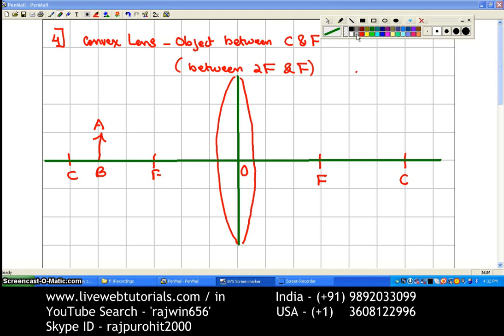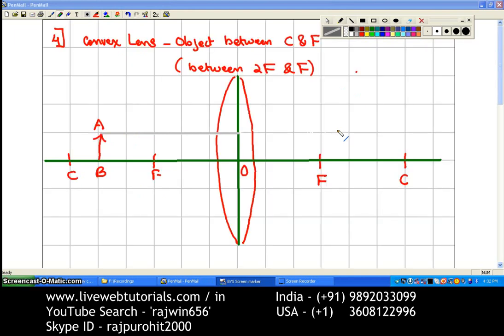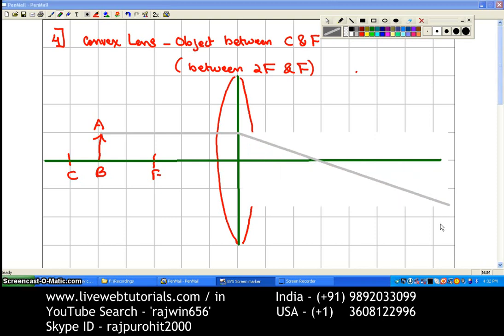Now the next ray that I'm drawing is the ray that is parallel to the principal axis. After refraction or passing through the lens, it has to pass through the focus.